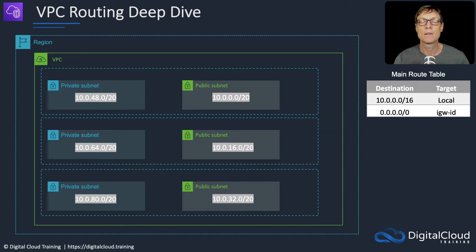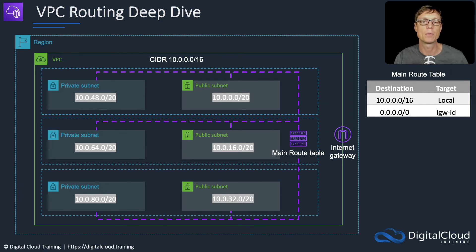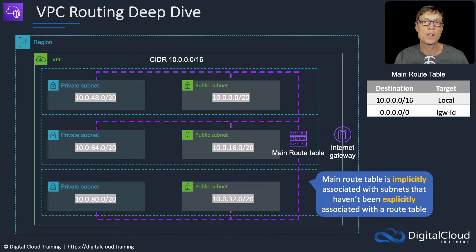Whenever you create a VPC, the main route table is created by default. In this case, we have an internet gateway as well, which is attached at the VPC level for inbound and outbound communication with the internet. The overall CIDR block here is 10.0.0.0/16, so all of our subnet ranges come from that overall block. The main route table is associated with all of the subnets, and that association is actually implicit, meaning the subnets have not been explicitly assigned to the main route table.